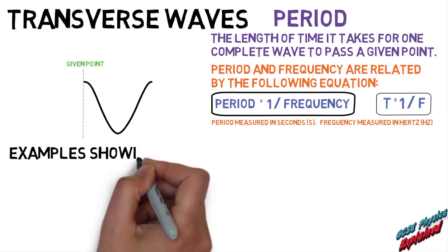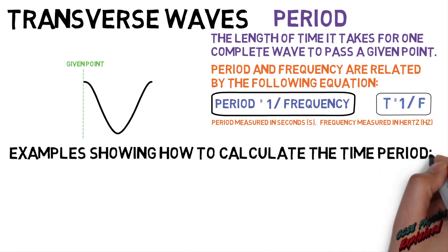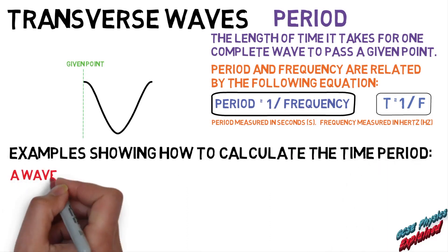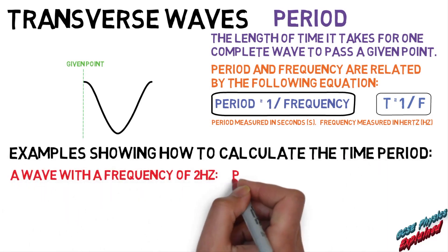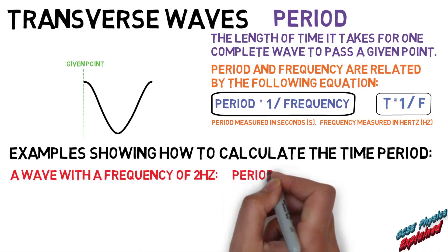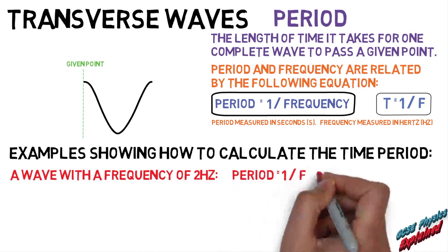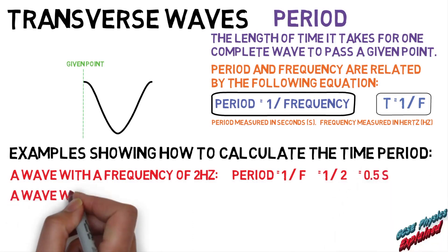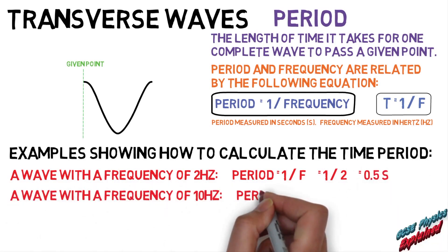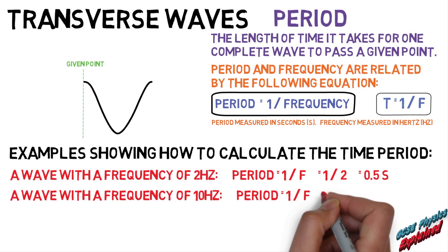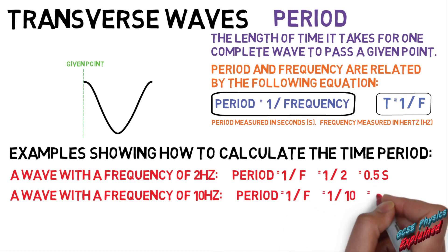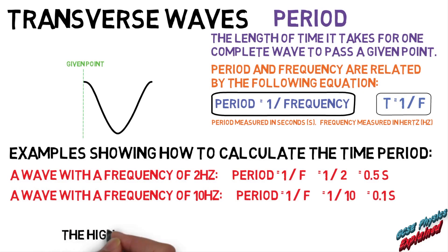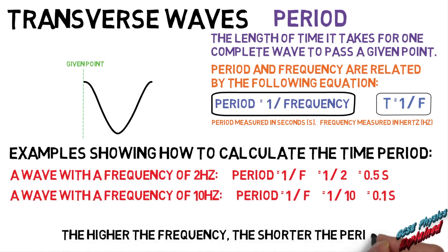Here are examples showing how to calculate the time period. A wave with a frequency of two hertz: Period equals one divided by f equals one divided by two hertz equals 0.5 seconds. A wave with a frequency of 10 hertz: Period equals one divided by f equals one divided by 10 hertz equals 0.1 seconds. The higher the frequency, the shorter the period.